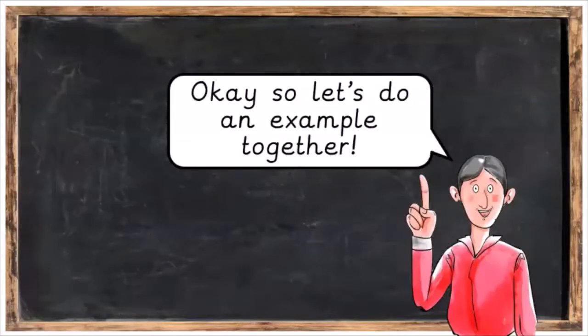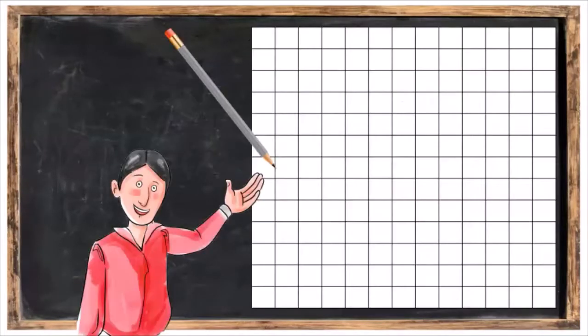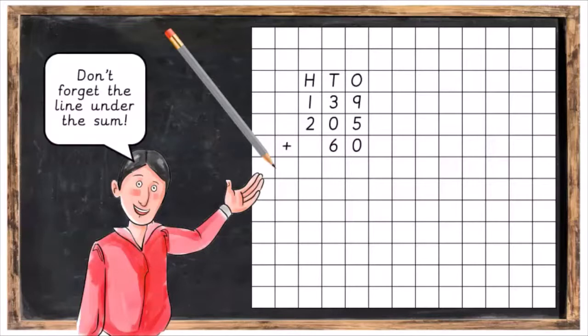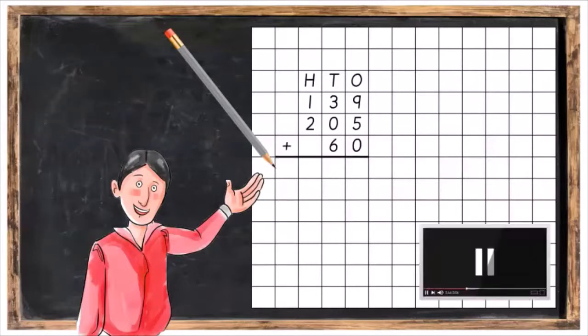Let's do an example together. Let's start by writing down the sum. I'd like you to put H, T and O for hundreds, tens and ones, or units as some people like to call them. And we're going to write 139 plus 205 plus 60. Don't forget to put the line under the sum. Press pause, and when you've got that done, press play again.